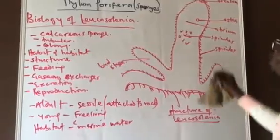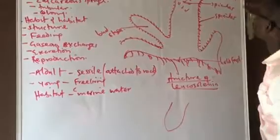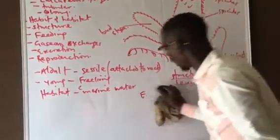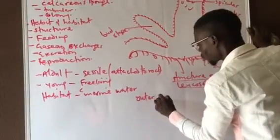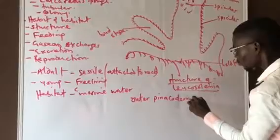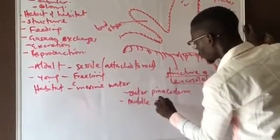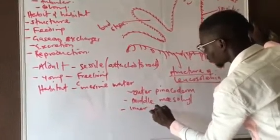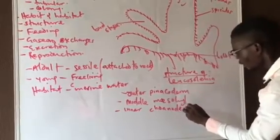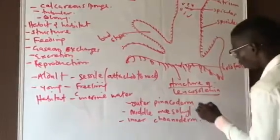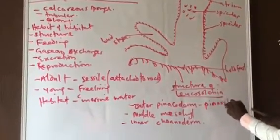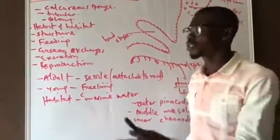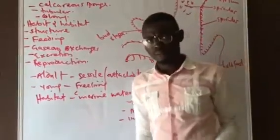They are tubular as you can see. This structure consists of three main parts. The body is divided into the outer pinacoderm, which consists of pinacocyte cells. These are cells that form pores which connect the outside to the inside. That is why we call them pinacocytes.